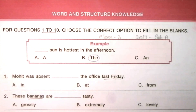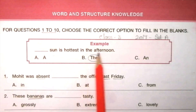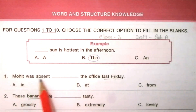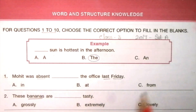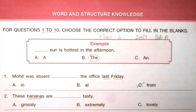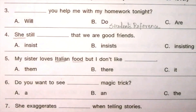Example: The sun is hot in the afternoon. Question 1: Mohit was absent ___ the office last Friday. Options: in, at, from. The answer is C: from. Mohit was absent from the office last Friday. Question 2: These bananas are ___ tasty. Options: grossly, extremely, lovely. The answer is B: extremely. These bananas are extremely tasty.